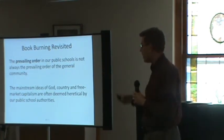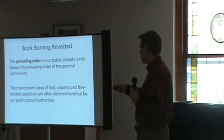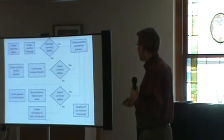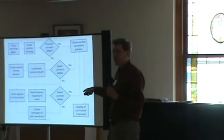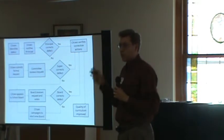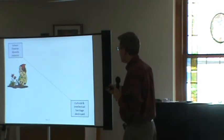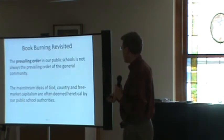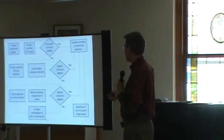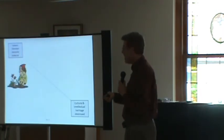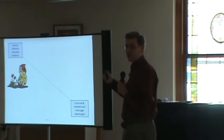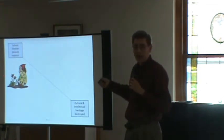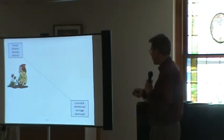We're back to this disconnection. Mainstream ideas of God, country, and free market capitalism are often deemed heretical by our public school authorities. So here's my point — this is the process for a citizen to get a book removed. What's the process for a school district to remove a book? We talked about weeding. The librarian comes across a book they don't like — say, one about free market capitalism — and they say it's outdated. They're going to rip that weed out and toss it. There are no steps. They don't need the superintendent's approval, the school board's approval — the school board doesn't even know about it. And just like that, cultural and intellectual heritage is possibly destroyed.